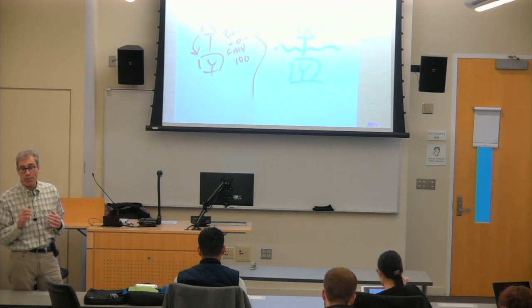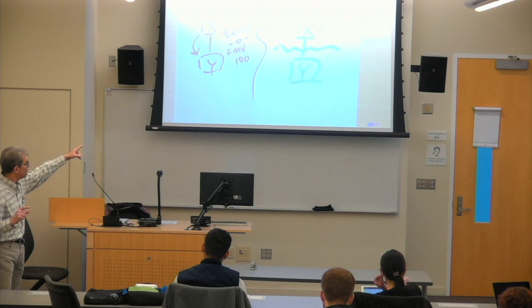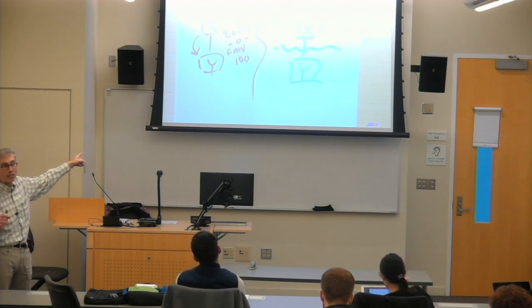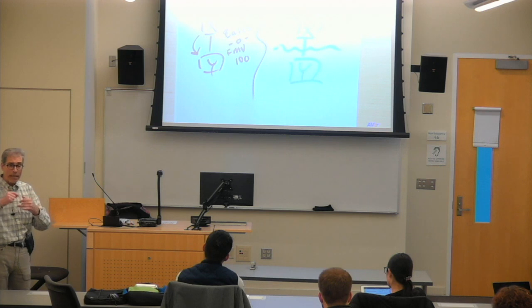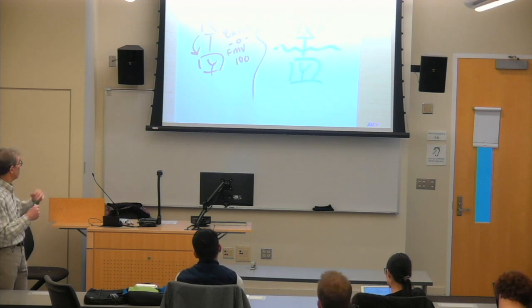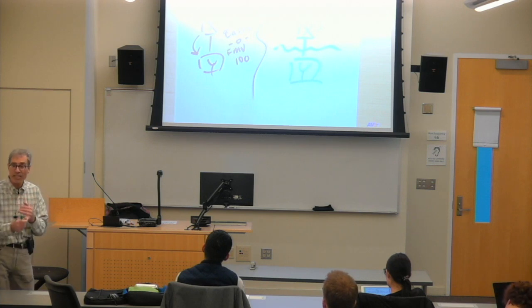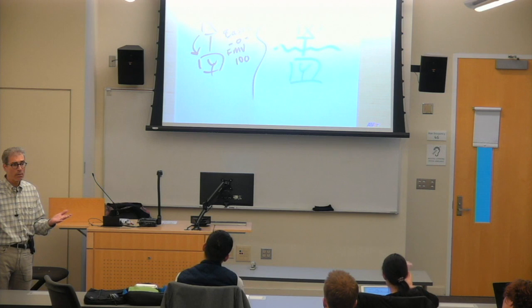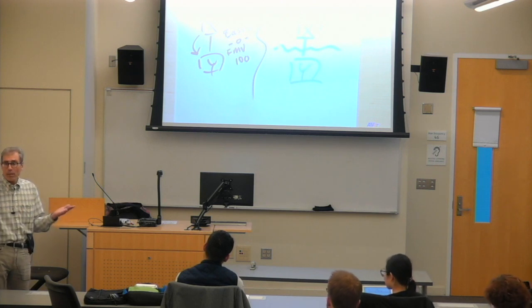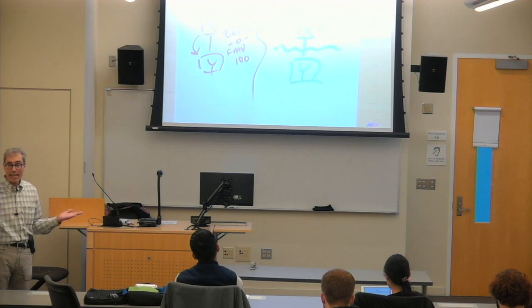The point was that if we look to section 351, 351 says that Y has to be a corporation for 351 to be relevant in the first place. So if 367 says that Y will not be treated as a corporation, that means 351 no longer is applicable for the transfer of this asset. If 351 doesn't apply, what applies? Just normal 1001 realization event. Yeah. Normal realization event taxation. Section 1001. So it becomes a taxable transaction.